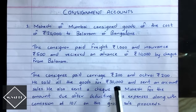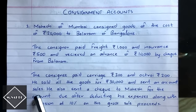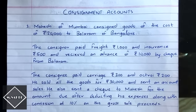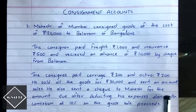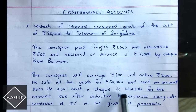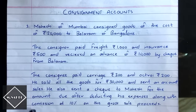Balaram sold all the goods for rupees 30,000 and sent an account sales. Account sales is a statement containing all the information of what the consignee did — how much goods he received, how much he sold, and how much commission he charged. He also sent a cheque to Mahesh after deducting his expenses along with commission at 10% on the gross sale proceeds, i.e., 10% on rupees 30,000.